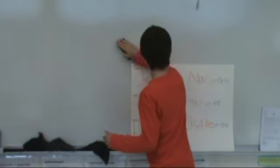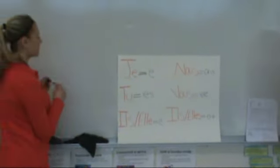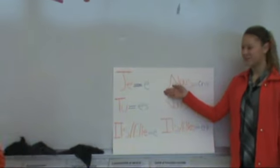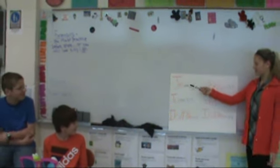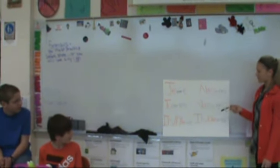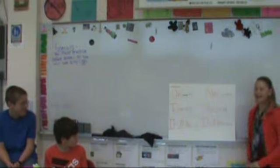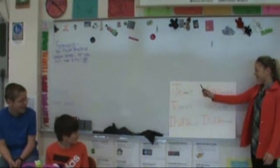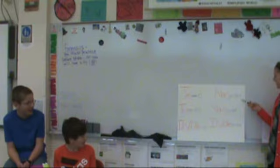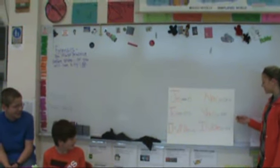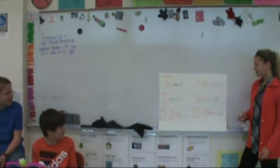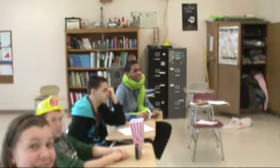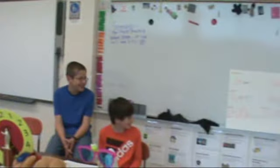Now, how to pronounce them — there's a song we're going to sing together to remember how they're in order: e, es, e, ons, ez, ent — e, es, e, ons, ez, ent.